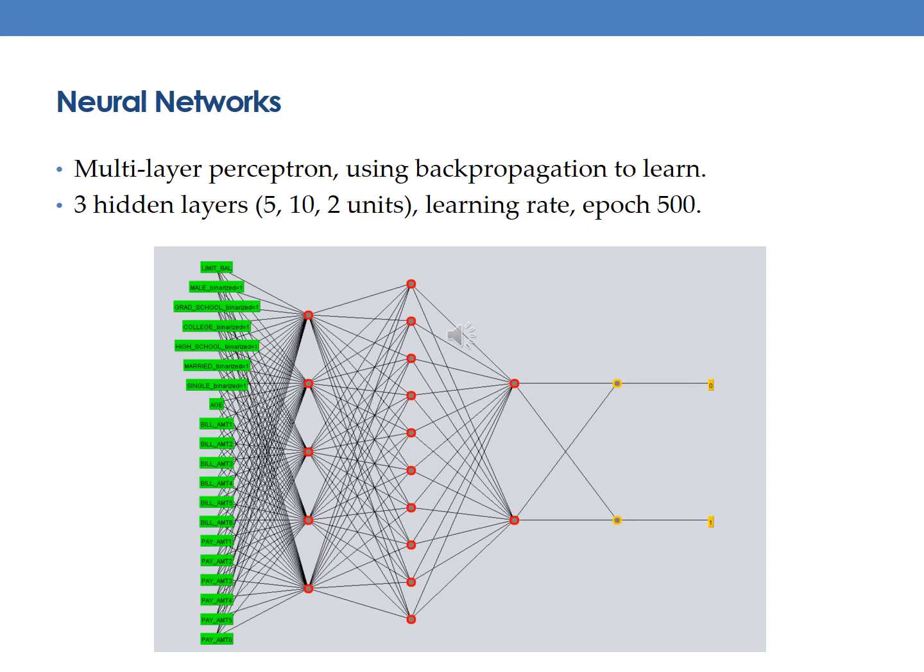The second algorithm we tried is Neural Networks. In this case, we built a three hidden layer perceptron with five, ten, and two units in each hidden layer. Each element in one layer is weighted and associated with every unit in the next layer. And based on the arguments of the maxima in the output layer, the input can be classified. Our model tried learning rates of 0.1, 0.3, and 0.5, and ran 500 passes through the training set in each attempt.